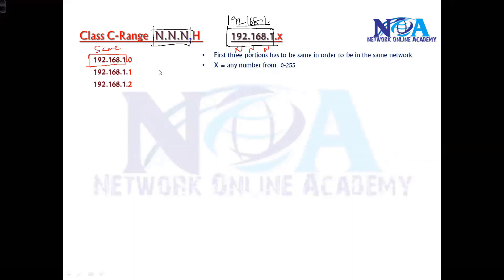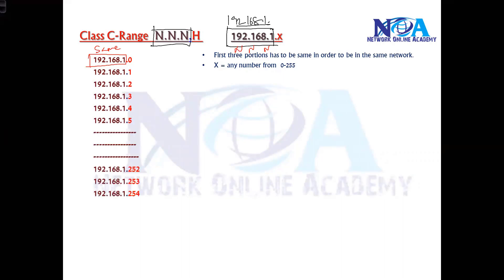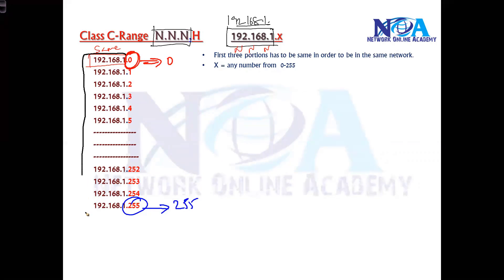Starting from 192.168.1.0, you can assign 1, 2, 3, 4, 5 and go all the way up to 252, 253, 254, 255. Zero is the network ID — we'll discuss that later. As per IP addressing, the first number starts at 0 and goes up to 255. This applies to any C class address, not just this specific one.